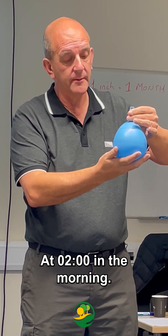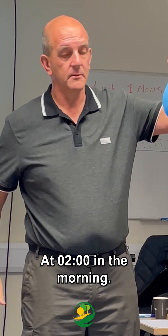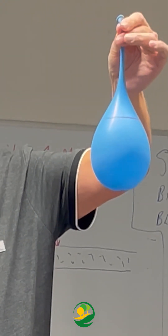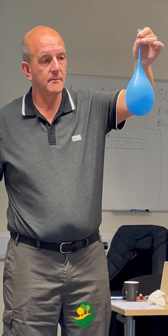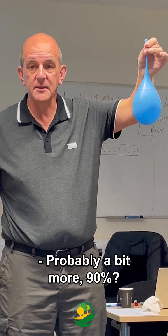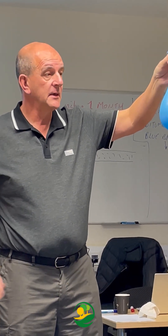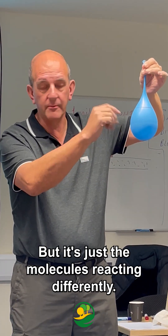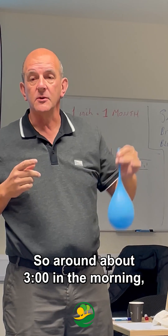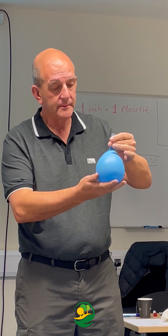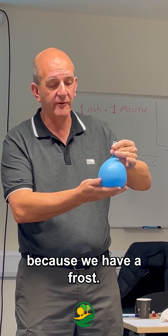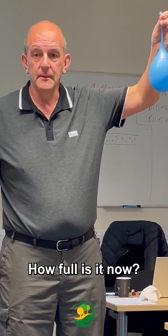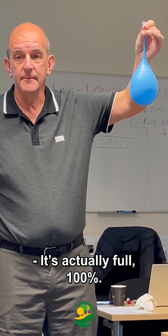At two o'clock in the morning, the relative humidity is around ninety percent — it's ninety percent full of water. Same amount of water, but the molecules are reacting differently. Around about three o'clock in the morning, the temperature drops again because we have a frost. How full is the molecule now? It's a hundred percent — relative humidity at three o'clock in the morning is now one hundred percent.